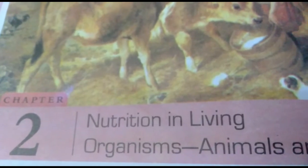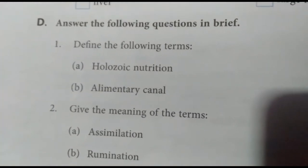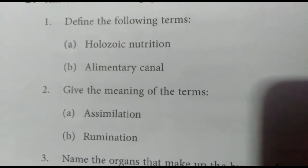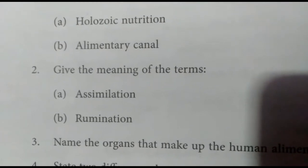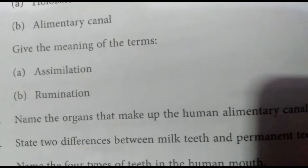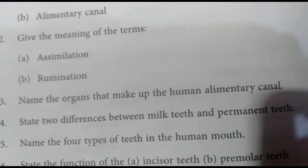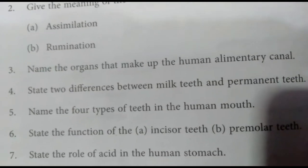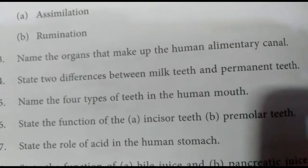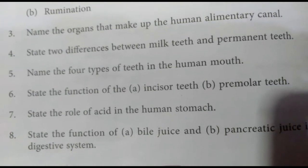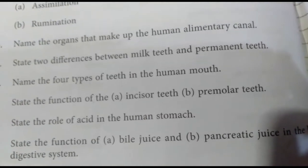The D part is: Answer the following questions in brief. First, define the following terms: holozoic nutrition, and alimentary canal. Second, give the meaning of: assimilation and rumination. Third, name the organs that make up the human alimentary canal. Fourth, state two differences between milk and permanent teeth. Fifth, name the four types of teeth in the human mouth. Sixth, state the functions of the incisor and premolar. Seventh, state the role of acid in the human stomach. Eighth, state the function of bile juice and pancreatic juice in the human digestive system.